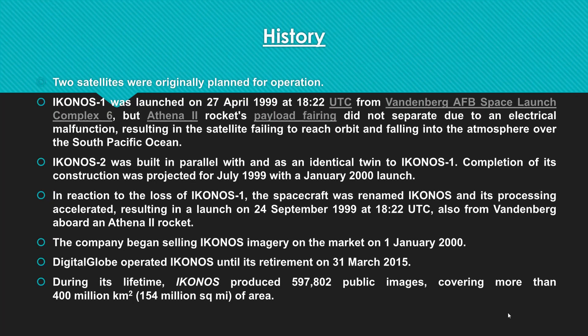The history of IKONOS: originally two satellites were planned. IKONOS-1 was launched on April 27, 1999, from Vandenberg AFB Space Launch Complex 6. However, the Athena II rocket's payload fairing did not separate due to an electrical malfunction, resulting in the satellite failing to reach orbit and falling into the atmosphere over the South Pacific Ocean.